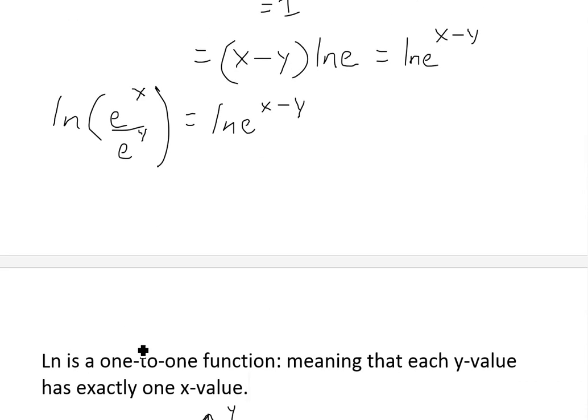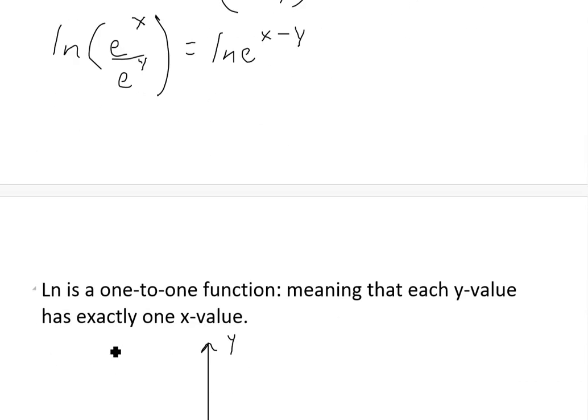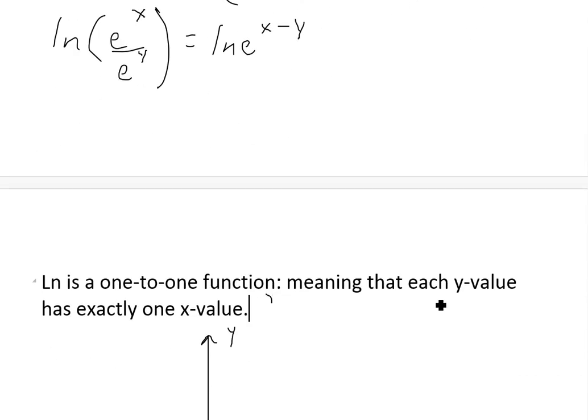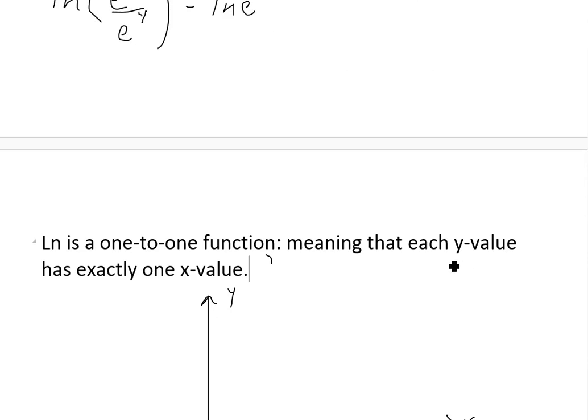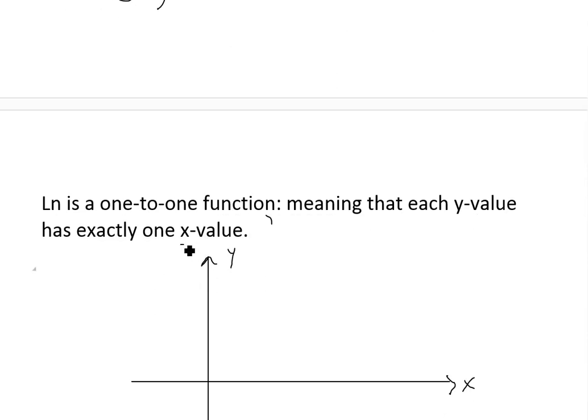Now another property about ln, like I showed in my last proof video. Ln is a one-to-one function, and this just means that each y value has exactly one x value.